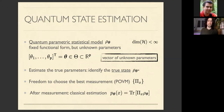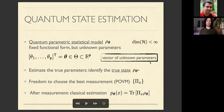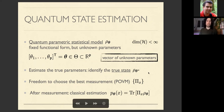Let's start from quantum state estimation. Most of us are familiar with this topic: we have a quantum parametric statistical model, which is a parametric family of density matrices. For the rest of the talk I will only consider finite-dimensional Hilbert spaces. We have a vector of unknown parameters that we want to estimate — this is a state estimation problem, because identifying the true parameters means identifying the true state.